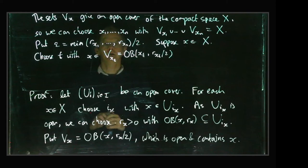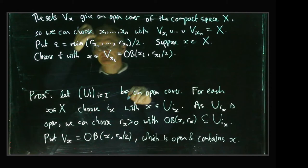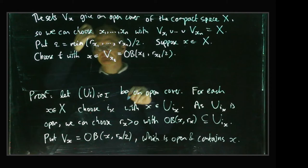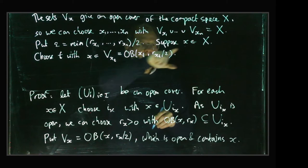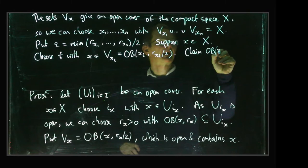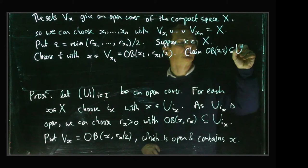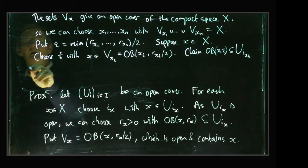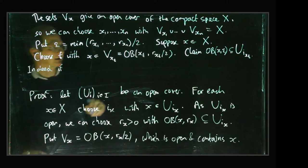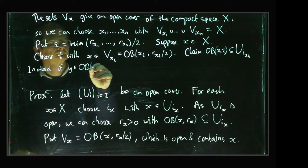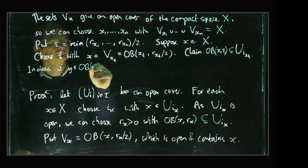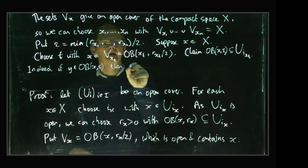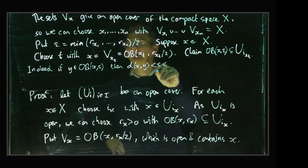Okay, now we're supposed to show that the open ball of radius epsilon around x is contained within some one of these sets here. So it'll be enough to show that the open ball around x of radius epsilon is contained within the set Ui_xt. Indeed, if we've got some point y lying in this open ball, then we know that the distance from x to y is going to be less than epsilon, and epsilon was the minimum of these various things here, so this is going to be less than or equal to r_xt over 2.